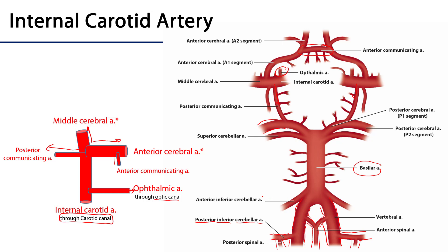From the basilar artery we have AICA — the anterior inferior cerebellar arteries — coming off on either side to supply the cerebellum with blood. The basilar continues, branching into the superior cerebellar arteries and then the posterior cerebral arteries. A very important classical anatomical relationship: between these two arteries runs cranial nerve three, the oculomotor nerve. So if there is an aneurysm here, it can impinge on cranial nerve three, leading to issues with movements of the eyes.